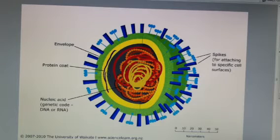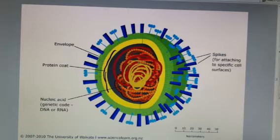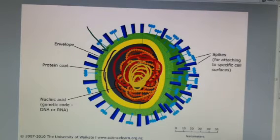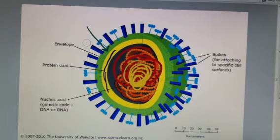We have a protein coat shown here in yellow. Then sometimes outside of the protein coat is an envelope — a membrane envelope. This green part here represents the envelope.